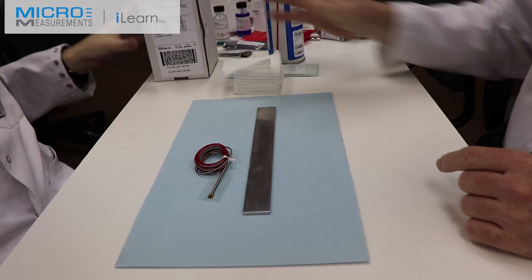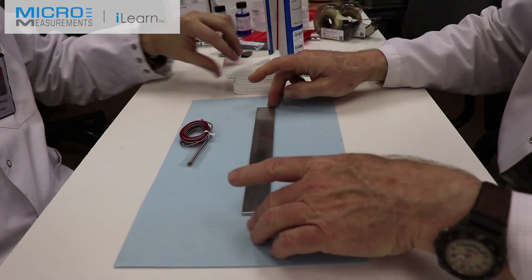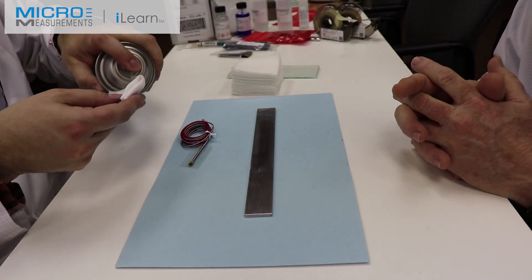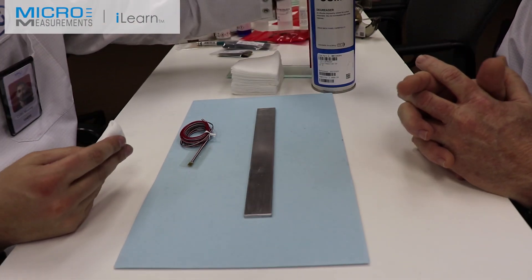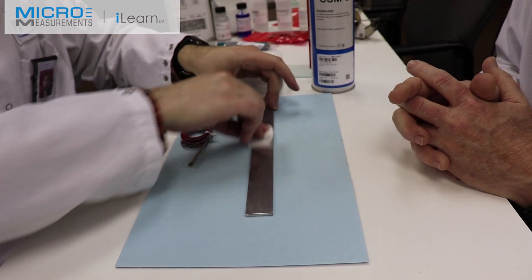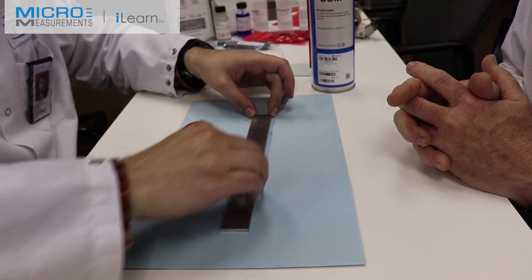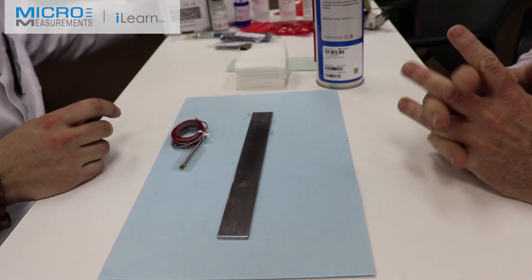First thing we need to do is degrease the part. We've got this aluminum beam and Colin is going to take a gauze sponge, fold it into quarters, and then degrease the surface of the beam, removing any machining oils or fingerprints. We don't want contamination being ground into the part.